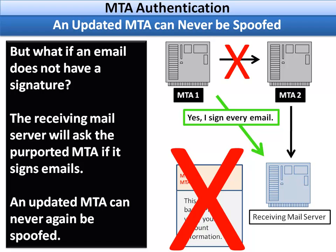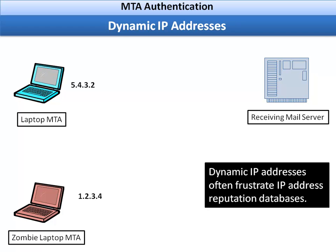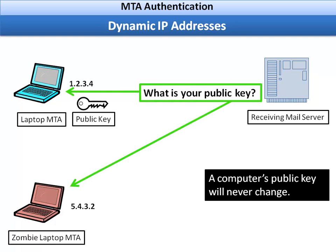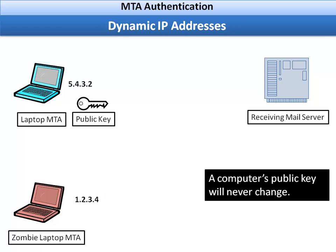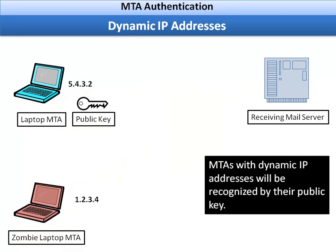Dynamic IP addresses often frustrate IP address reputation databases because both legitimate and zombie computers keep swapping IP addresses. However, once the MTA has been updated with MTA authentication, the public key will never change even if the IP address is constantly changing. Each time a receiving mail server gets an email from one of these dynamic IP address MTAs, it will simply ask 'What is your public key?' So an MTA with a dynamic IP address will be recognized by its public key, not by the IP address, and the problem of dynamic IP addresses is solved.